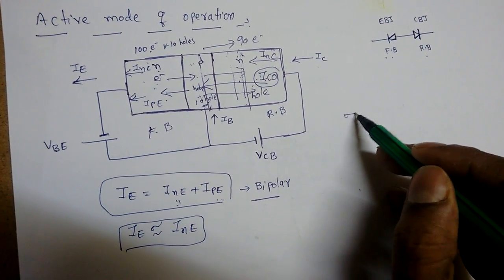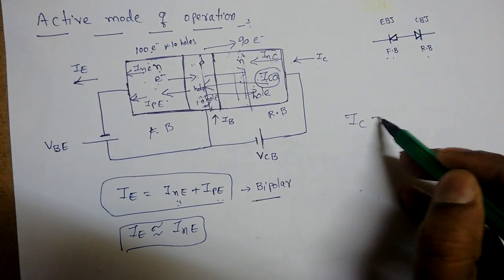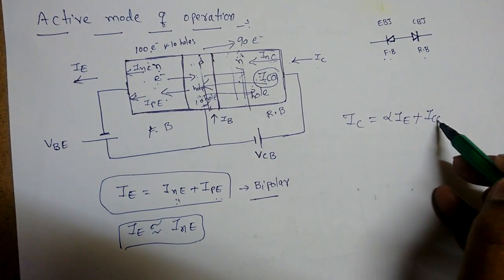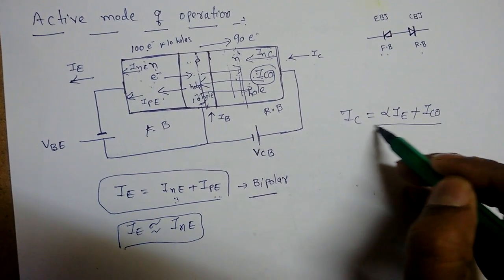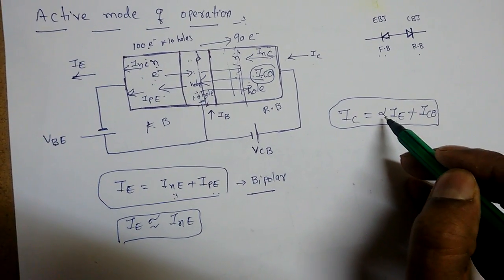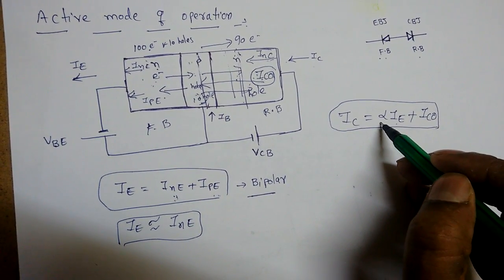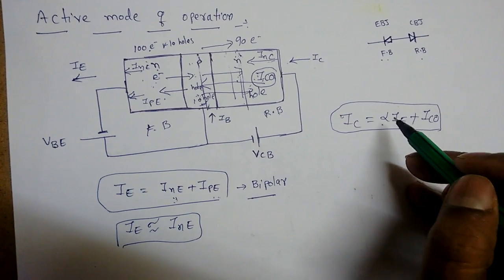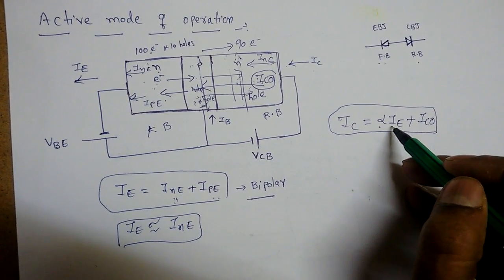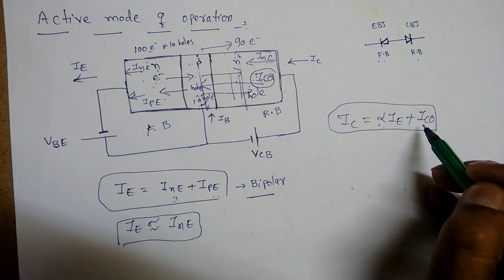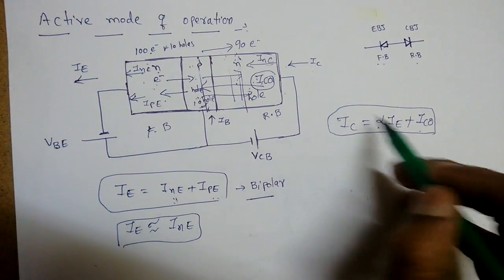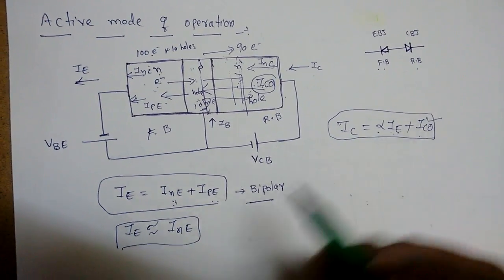The total collector current is: IC = α·IE + ICO, where α (DC current gain in common-base configuration) is less than 1 but approximately 1. So about 90% of IE reaches the collector, and ICO is the small minority carrier current.